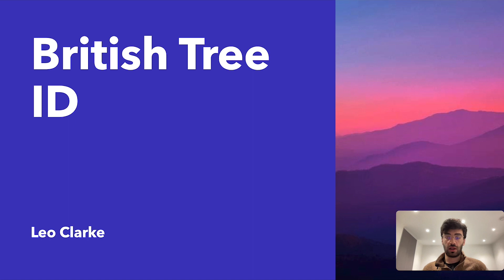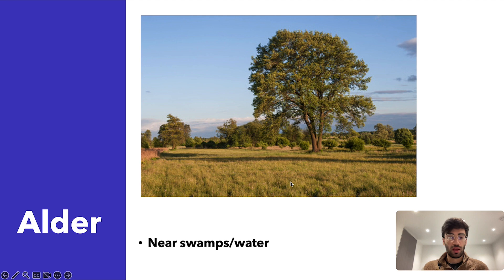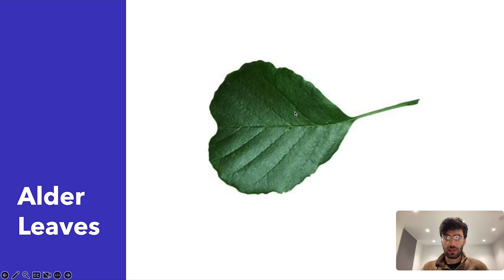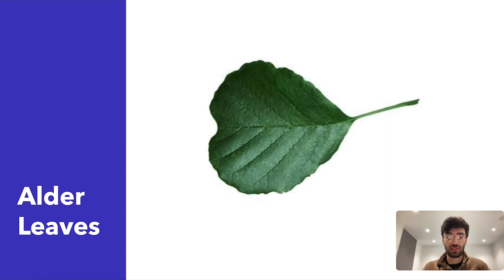I've put a list of a couple of trees — not every single tree you'll see, just some common ones. Let's start with the alder tree. This tree lives near swampy water. The leaf has quite a distinct shape — the main thing about it is a little notch at the end, which you see in most alder leaves. It's not really that serrated, although there is a little bit around the outside, and the leaves aren't particularly big.